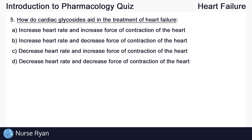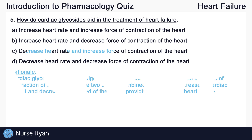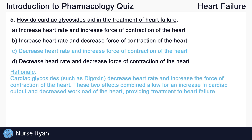Question number five: how do cardiac glycosides aid in the treatment of heart failure? The answer here is C: decreased heart rate and increased force of contraction of the heart, like we mentioned earlier. These two effects combined allow for an increase in cardiac output and decreased workload of the heart, providing treatment to heart failure.